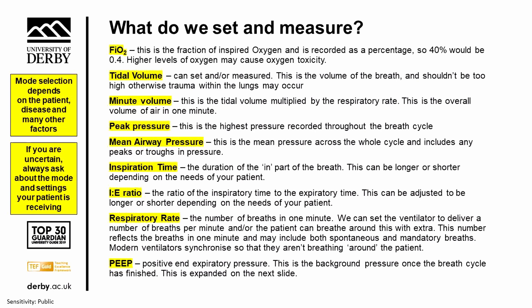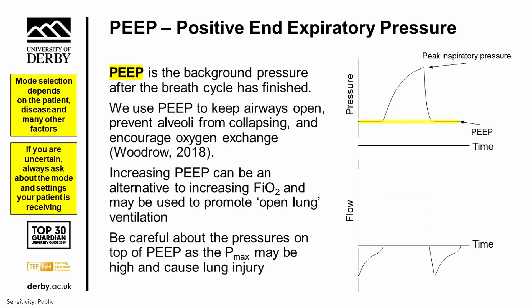One important setting is PEEP — positive end expiratory pressure. This is the background pressure at the bottom of the breath that keeps the airways open throughout the whole cycle and prevents alveoli from collapsing, thereby increasing oxygen exchange. We can increase PEEP as an alternative to increasing oxygen amounts, and it can promote open lung ventilation. However, we have to be careful, because higher levels of PEEP combined with inward breath pressure can cause worse lung injury and trauma. There is now emerging evidence that PEEP shouldn't be too high — we should not be overly aggressive with it and should keep within normal boundaries.